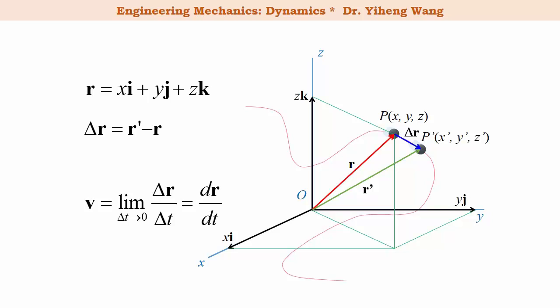Note that if delta t is very small, then r prime and r almost fall on the same line, and this very small dr is perpendicular to the position vectors, and therefore tangent to the path. So here is an important conclusion: the direction of the instantaneous velocity is always tangent to the curved path.